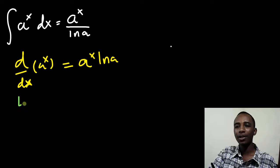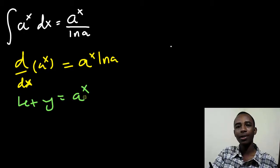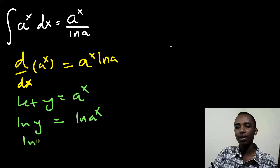So, if I let y equal a to power x, then I can put natural logs on both sides. The natural log of y and the natural log of a to the power x, then the natural log of y equals x times the natural log of a. So, I can take derivatives on both sides.